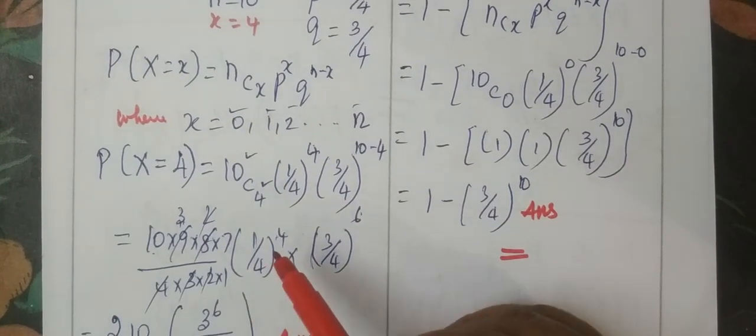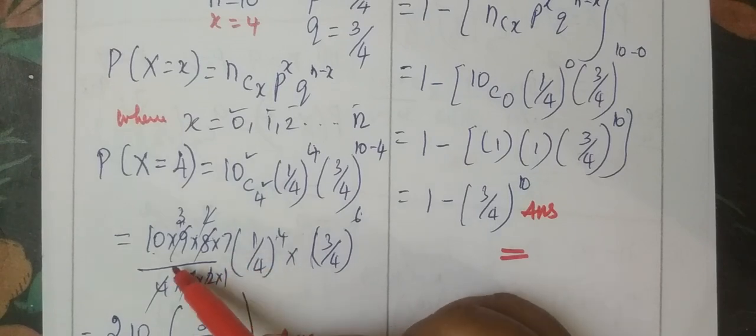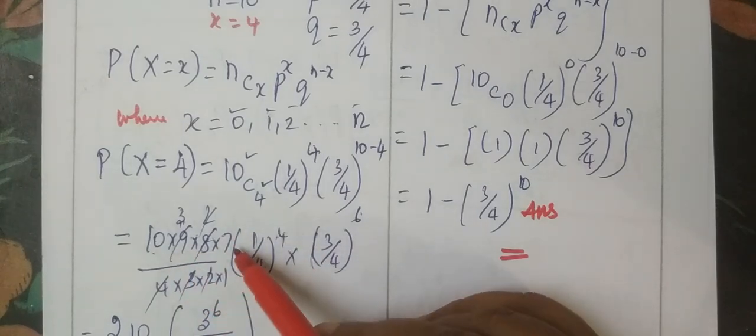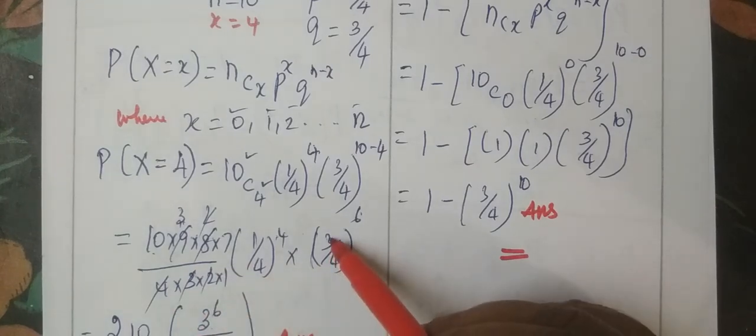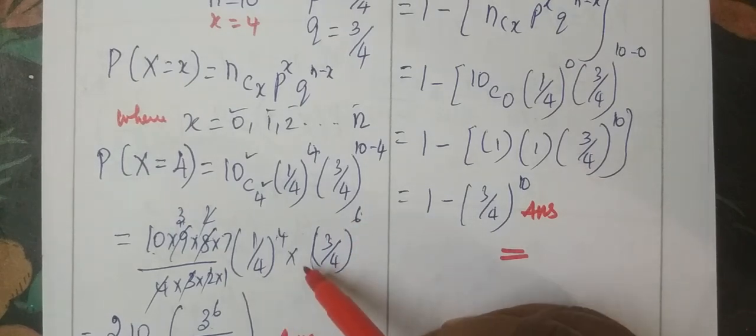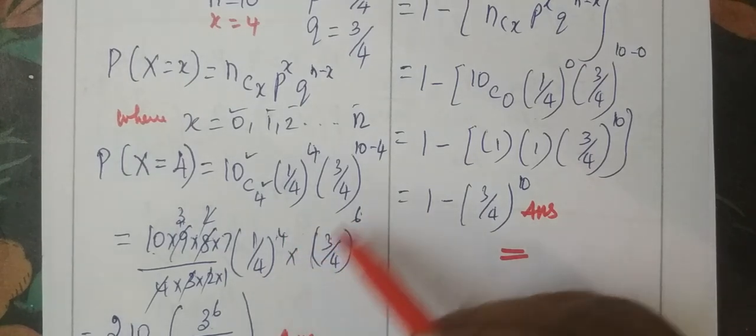10C4 is 10 times 9 times 8 times 7 over 4 factorial, which equals 210. Then 3 to the power 6, then 4 to the power, if you add 4 to the power 10.